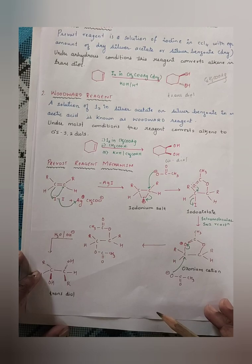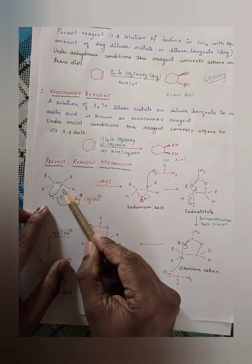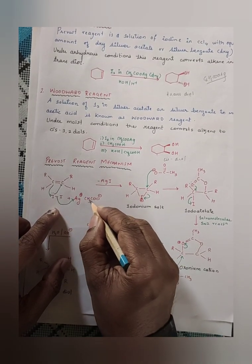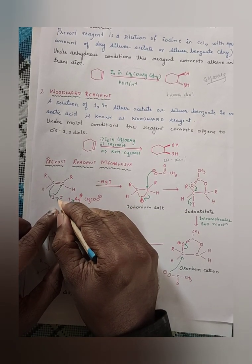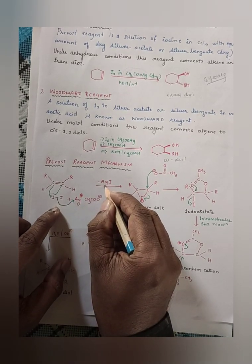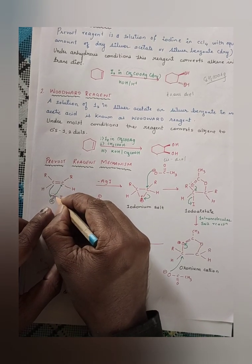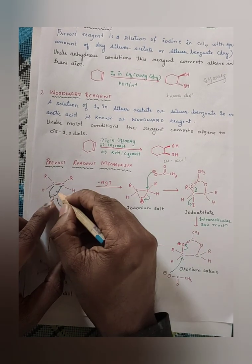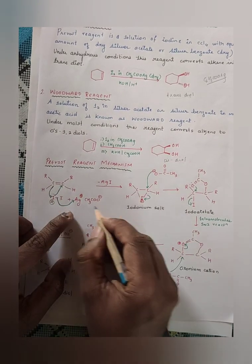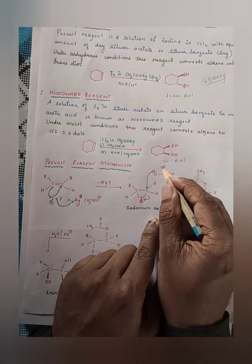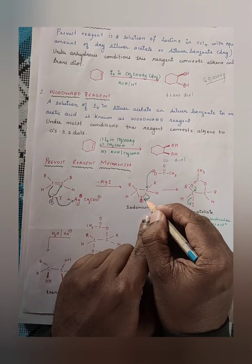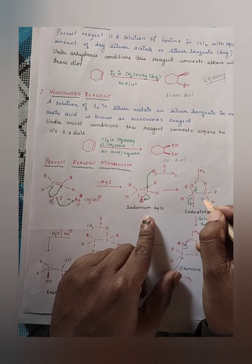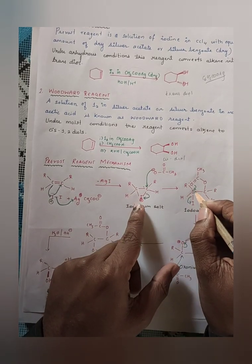In the Prevost mechanism, we start with an alkene treated with I₂ in silver acetate. Silver acetate dissociates to Ag⁺ and CH₃COO⁻. The Ag⁺ attracts the iodine, forming AgI and leaving a positive I⁺. This electrophilic I⁺ attacks the electron-rich alkene, forming a three-membered iodonium salt. The acetate (CH₃COO⁻) then acts as a nucleophile; the iodonium ring opens and the acetate attacks one carbon, forming an iodoacetate intermediate.